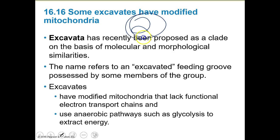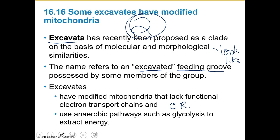Our second overall group is the Excavata. These have been recently proposed as a clade based on molecular and morphological similarity. The name refers to an excavated feeding groove possessed by some members. Excavates have modified mitochondria that lack a functional electron transport chain, so they can't generate ATP using oxygen. Instead, they use an anaerobic pathway like glycolysis to extract energy.